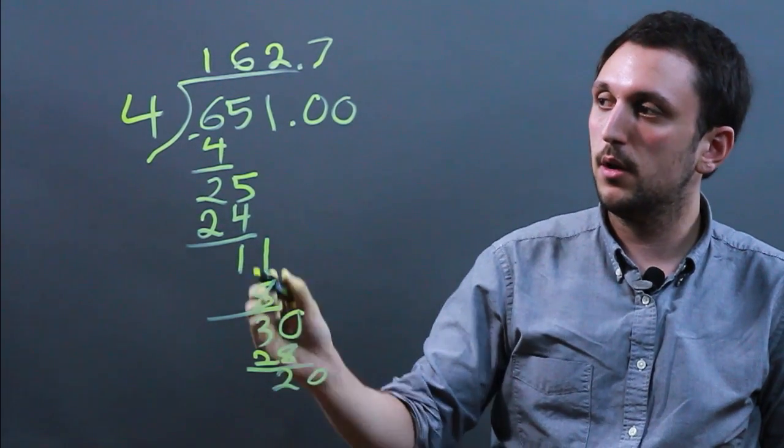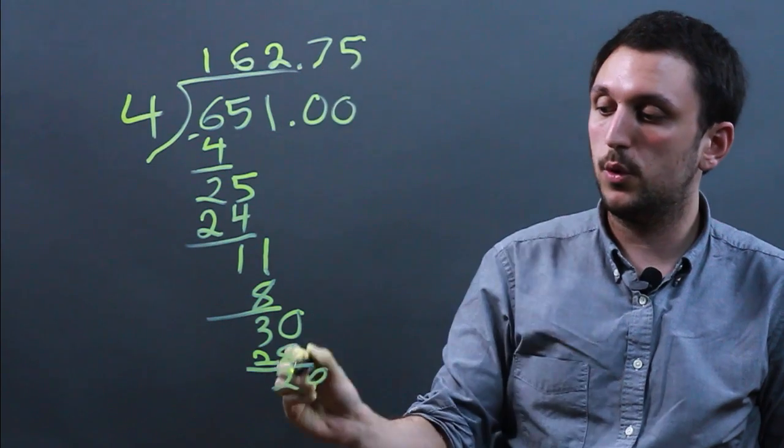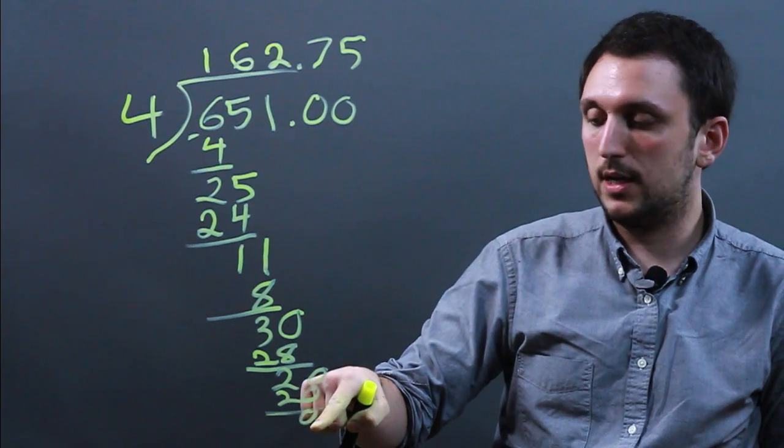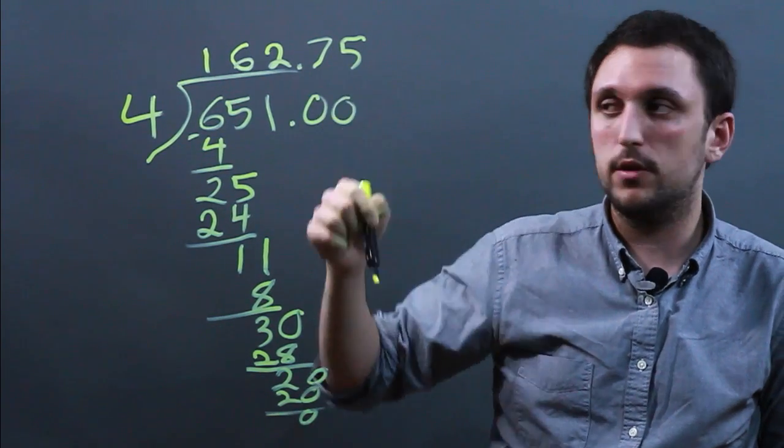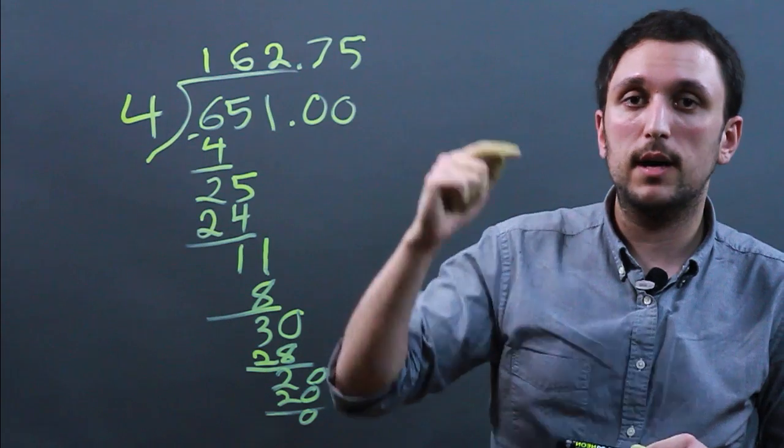We drop this 0 down. 4 goes into 20 five times and it goes in perfectly. 20 minus 20 is 0. And once we've gotten to a 0 here then we're done with the division. So 4 goes into 651, 162.75 times.